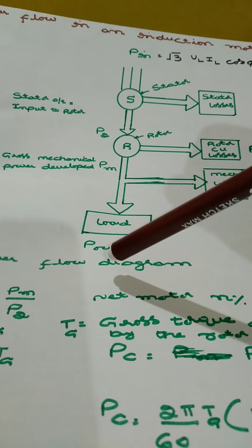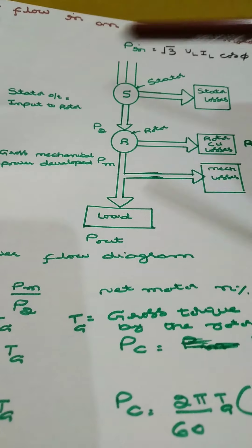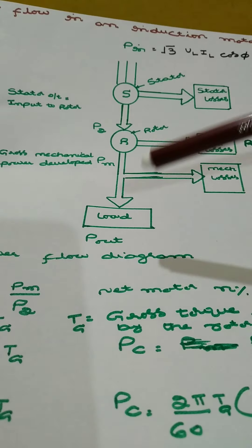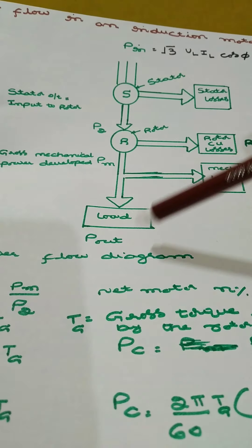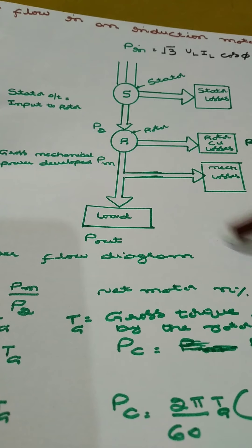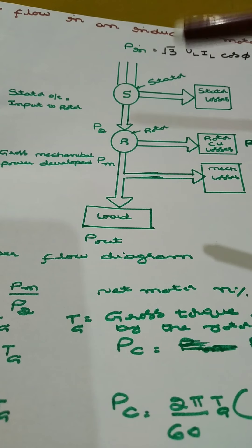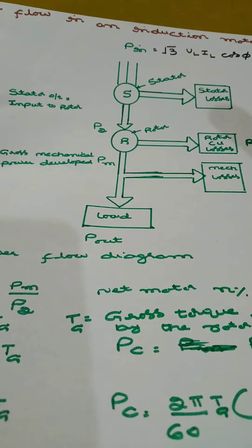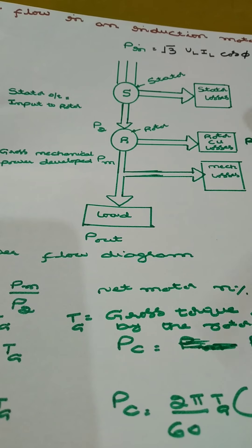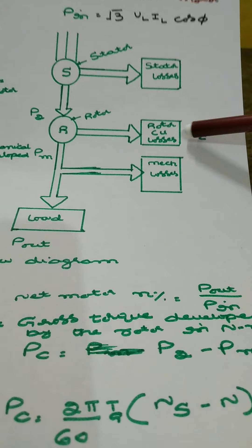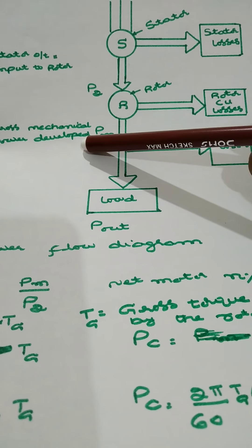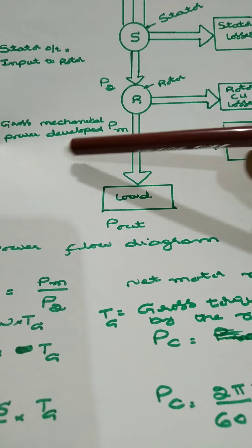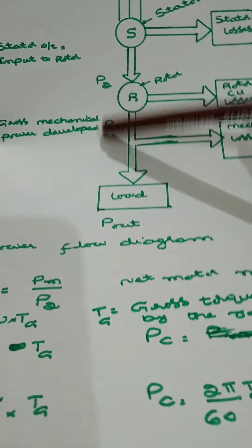This is a wonderful machine — how electrical power is converted into mechanical power, and through mathematical equations we visualize various stage losses. Slip is the main concept that decides rotor copper losses and the gross mechanical power developed in the rotor. Thank you.